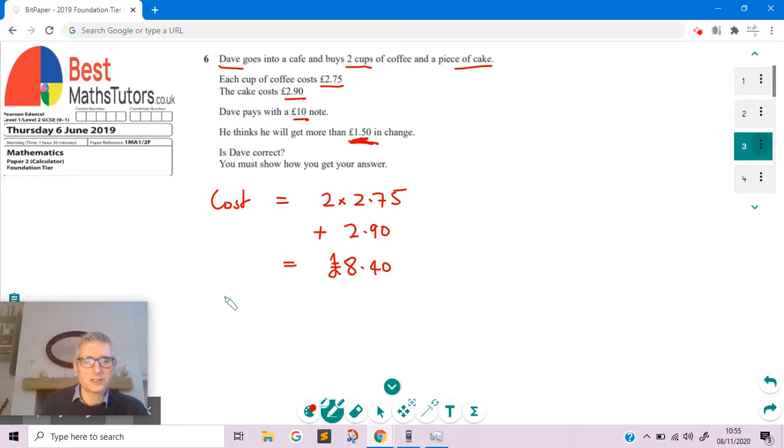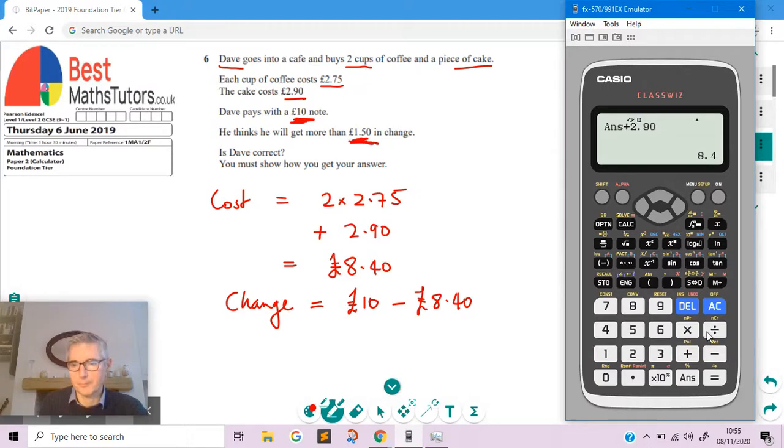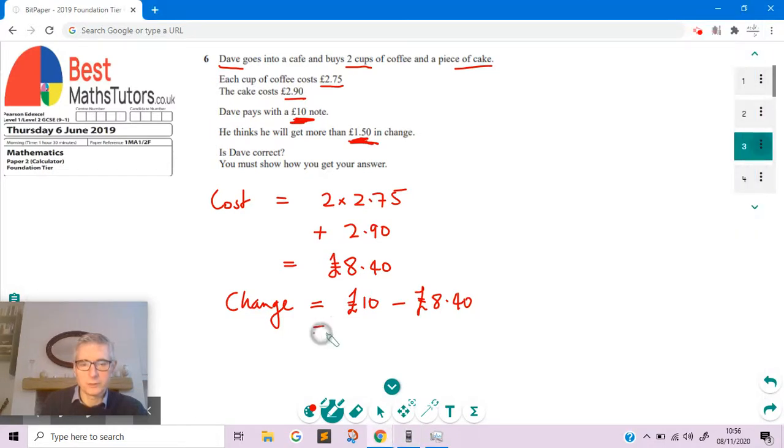So if we want to get the change, change is going to be the £10 that we've got there, minus the cost. That's going to equal £10 minus £8.40. I'm going to do this on the calculator. 10 minus 8.40. Press the SD button, and we've got 1.6, which is £1.60.